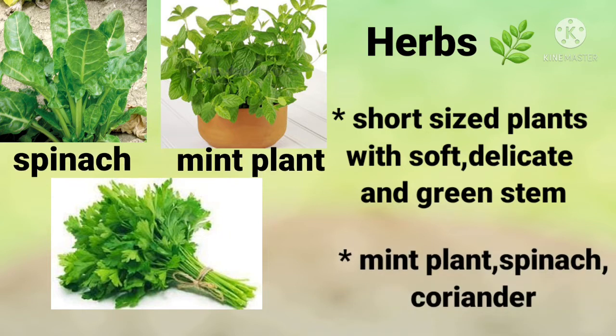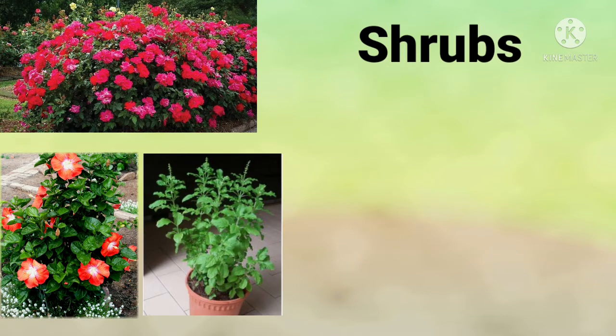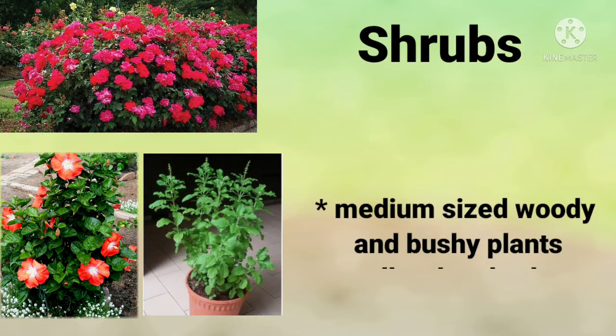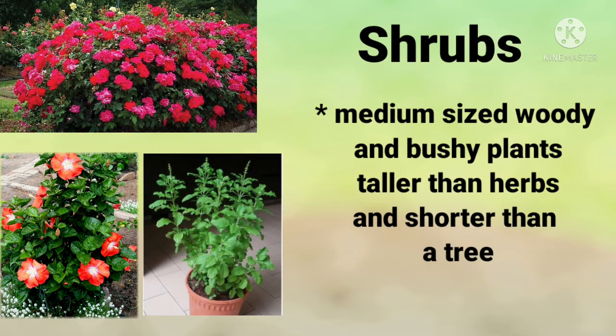Next are shrubs. Shrubs are medium-sized woody plants — taller than herbs and shorter than a tree. They are bushy plants. Shrubs have hard and woody stems with thin branches. Some examples of shrubs are rose plants, hibiscus, and tulsi.